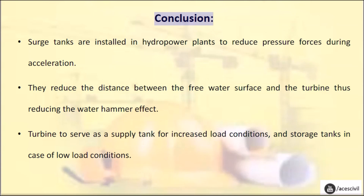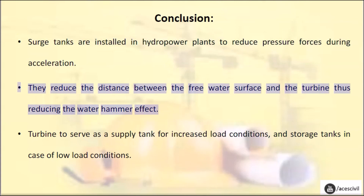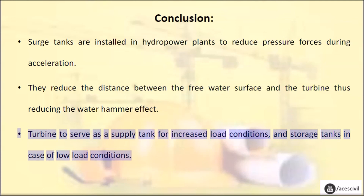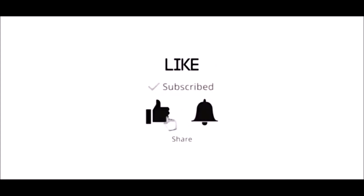Conclusion: Surge tanks are installed in hydropower plants to reduce pressure forces during acceleration. They reduce the distance between the free water surface and the turbine, thus reducing the water hammer effect. Turbines are served as a supply tank for increased load conditions and as storage tanks in case of low load conditions. Please subscribe, like, share, and do not forget to press the bell icon.